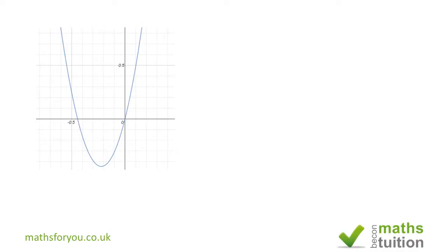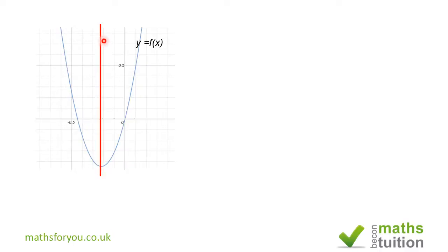As before, there is a turning point for this parabola, and this turning point will help us form a boundary for two distinct regions. The x-coordinate of the turning point is approximately -0.22.